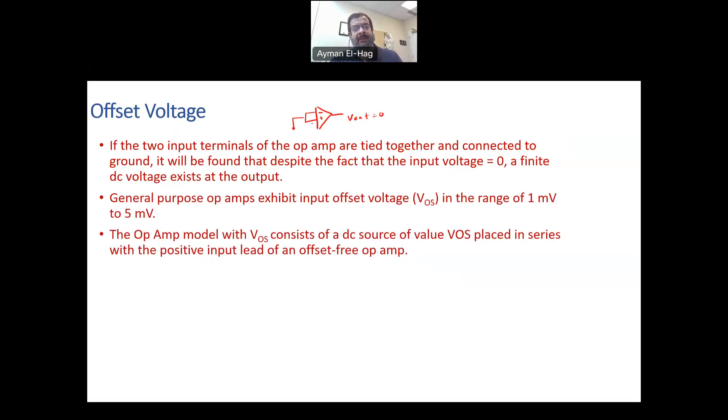in real operational amplifier, if you do that, you will find a finite DC voltage does exist. Why is that? Because there is an internal, what we call it, input offset voltage, VOS for short, that range from one to five millivolt. Now,